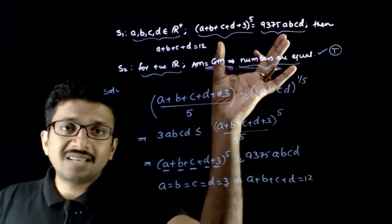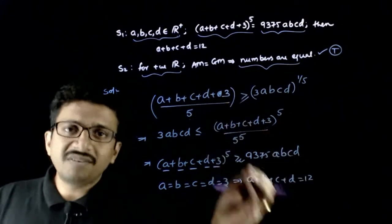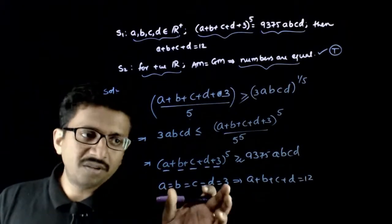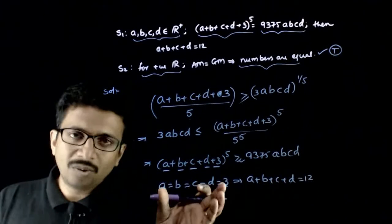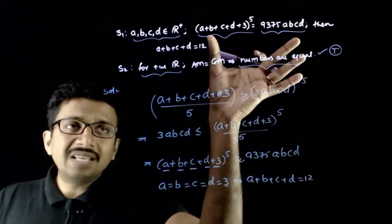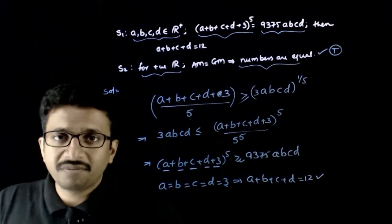If this happens, then this happens. If this happens, reverse need not be true. If this is true, then the reverse is true. If this is equal to this, then a plus b plus c plus d is equal to 12. It has to happen.